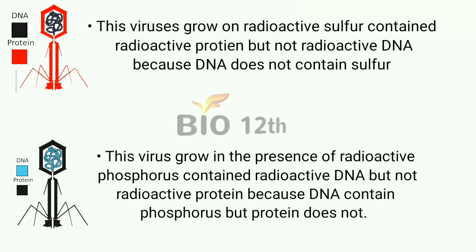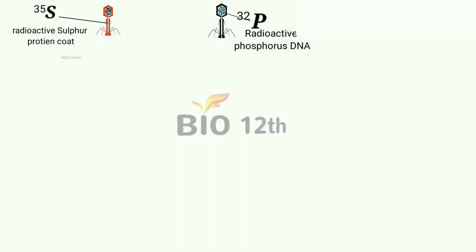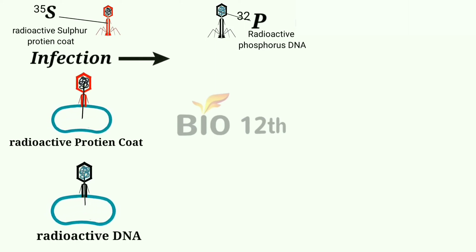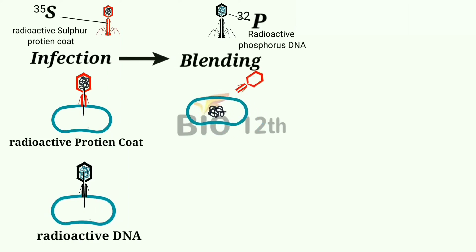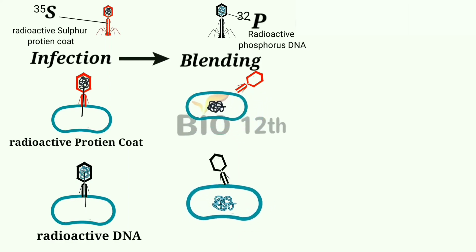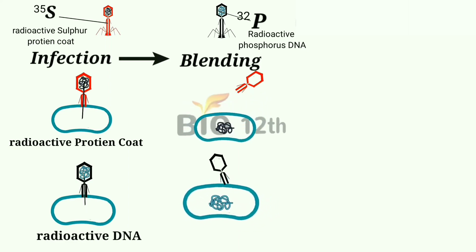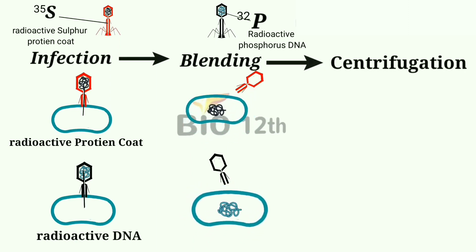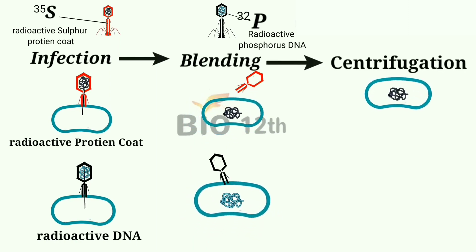Radioactive phages were allowed to attach to E. coli bacteria. Then, as the infection proceeded, the viral coats were removed from the bacteria by agitating them in a blender. The virus particles were then separated from the bacteria by spinning them in a centrifuge.